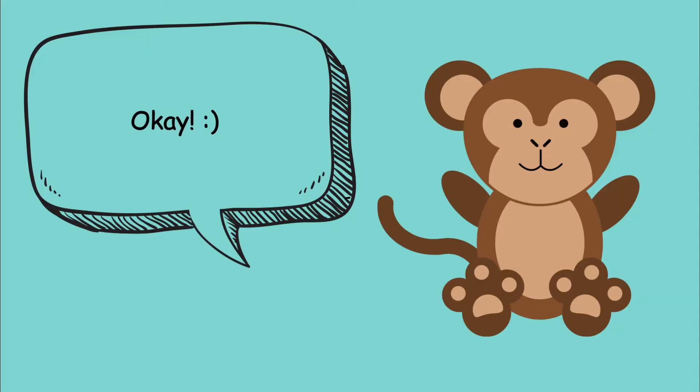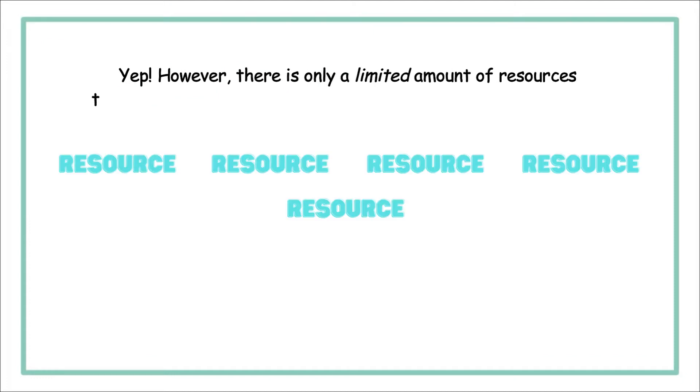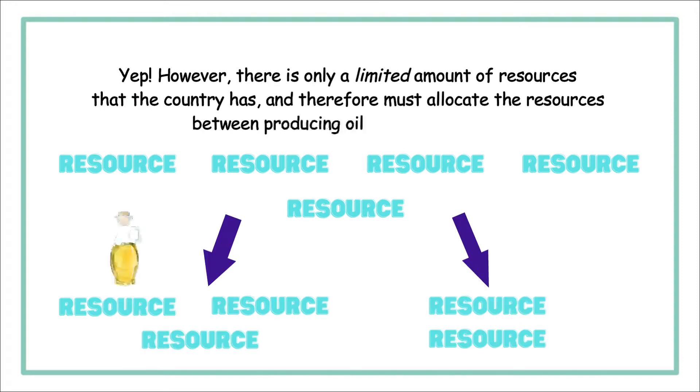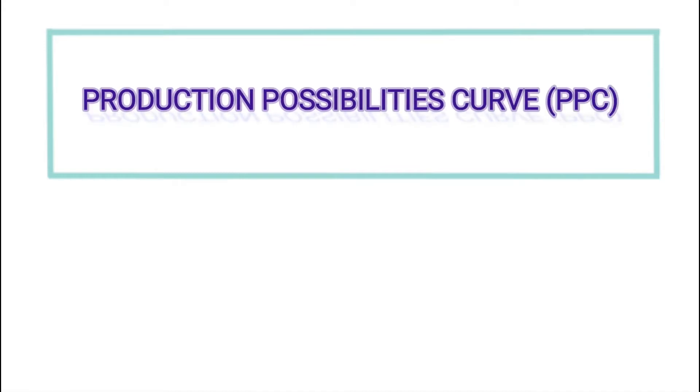Yep. However, there's only a limited amount of resources that the country has, and therefore must allocate the resources between producing oil and strawberries. To illustrate this idea, there is the production possibilities curve, or PPC, also known as the production possibilities frontier.